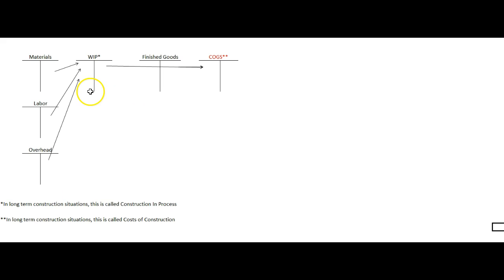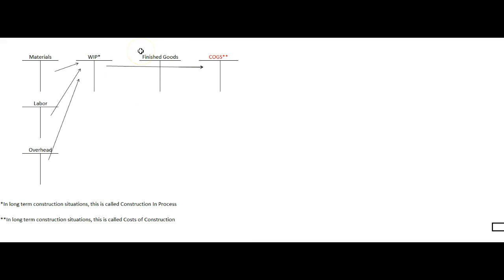We should all remember from managerial accounting that when we build something we take materials, labor, and overhead, move it into work in process, finish it, it sits in finished goods, and then it moves into cost of goods sold when we sell it. The thing about the construction business is there's really no inventory of bridges or freeways we've got done, so there's really no finished goods in the construction business.